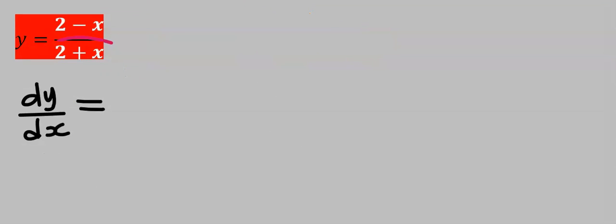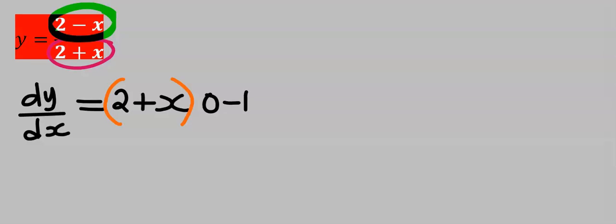Step number one: keep the denominator constant. Next, differentiate the numerator. If you differentiate 2, it is 0; if you differentiate x, it is 1.